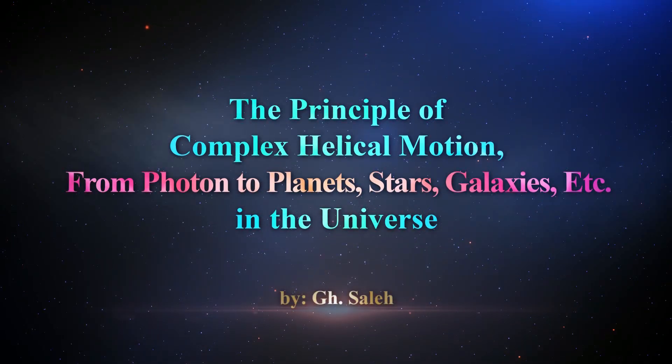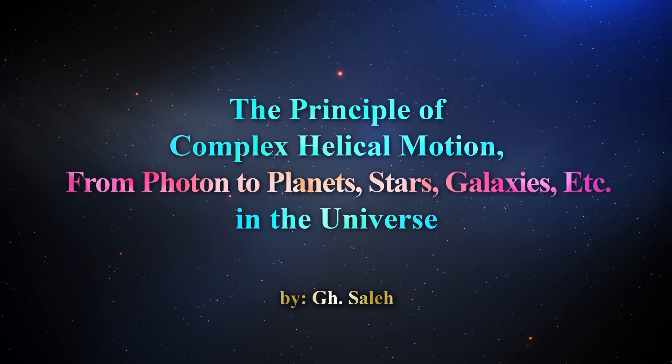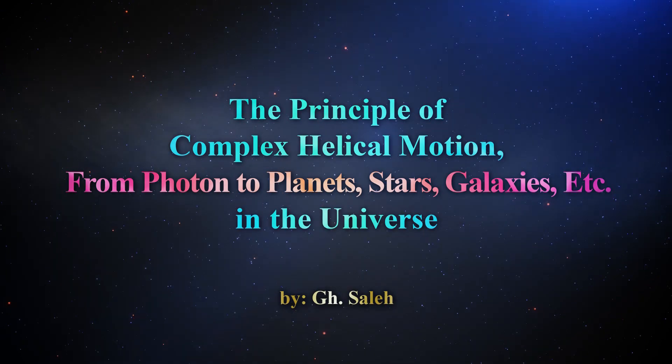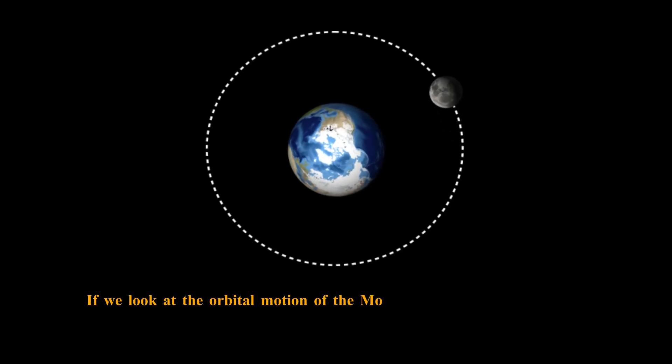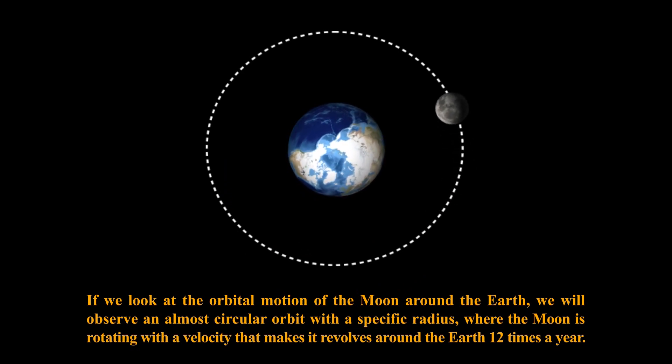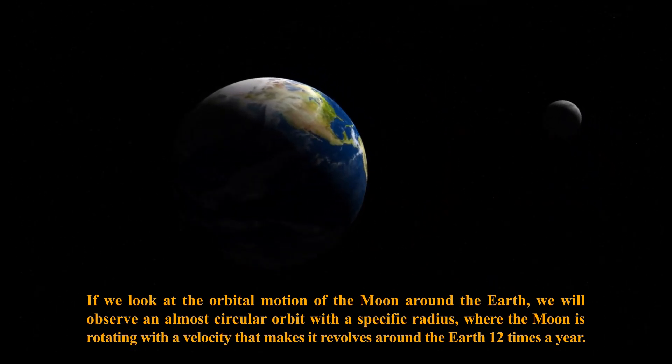The principle of complex helical motion from photon to planets, stars, galaxies, etc. in the universe. If we look at the orbital motion of the Moon around the Earth, we will observe an almost circular orbit with a specific radius where the Moon is rotating with a velocity that makes it revolve around the Earth 12 times a year.